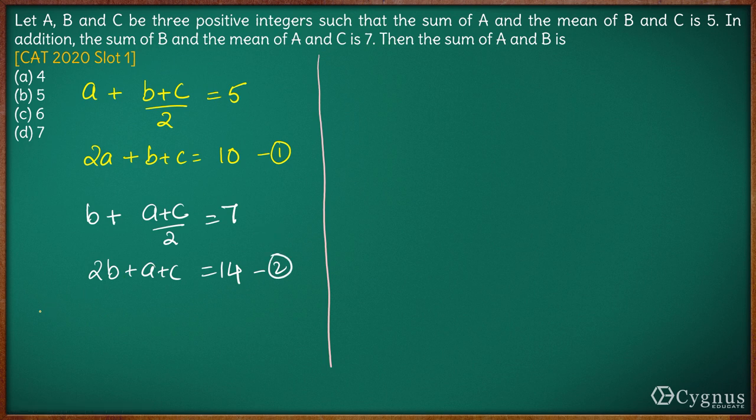Now let us simply subtract first from the second. So 2 minus 1, what we get is 2b minus b is b, a minus 2a is minus a, c minus c is 0, is equal to 14 minus 10 which is 4. So b minus a is 4, or we can write this as b is equal to 4 plus a.